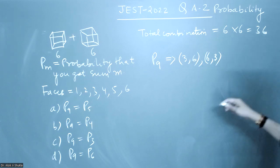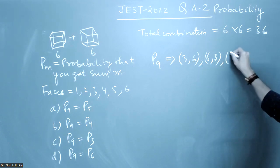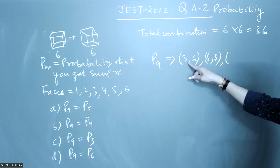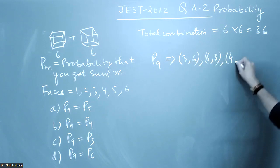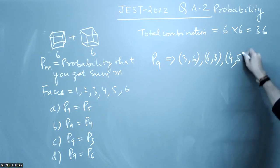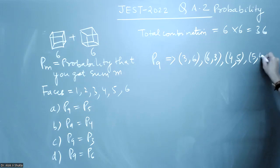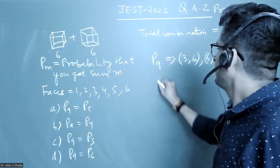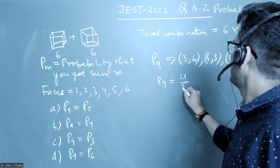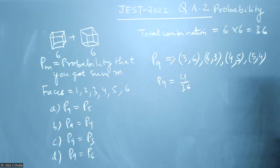Then first die is 4, second will be 5, and first is 5, second is 4. So (4,5) and (5,4) are the remaining combinations. There are four ways total, meaning P9 equals 4/36. The probability that we get sum 9 is 4/36.